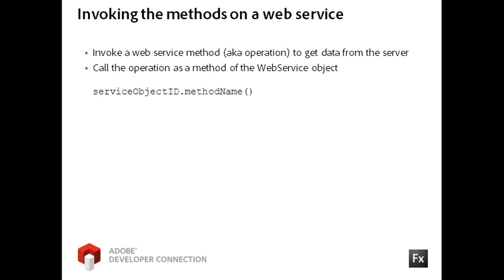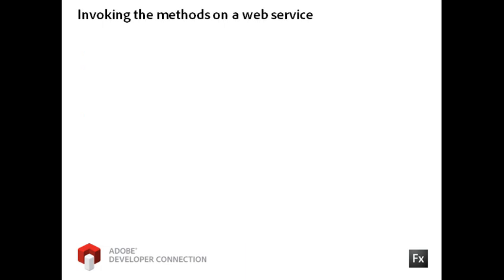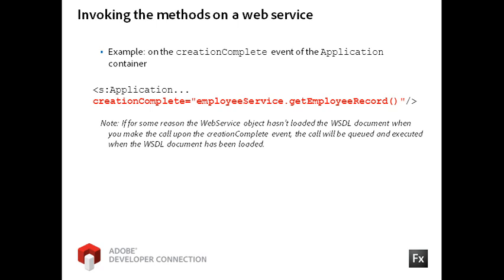You reference the service object's ID property, the dot, and then the method name. Obviously, you will need to know the server-side method names, which you can find in the WSDL. You can invoke these operations on Flex Framework system and user events. For example, this code calls the GetEmployeeRecord operation of the EmployeeService object on the Web Service component's load event, which is triggered when the WSDL document has loaded successfully. Note that if the Web Service object has not loaded the WSDL document by the time the CreationComplete event is dispatched, then the call will be queued and executed when the WSDL has loaded.